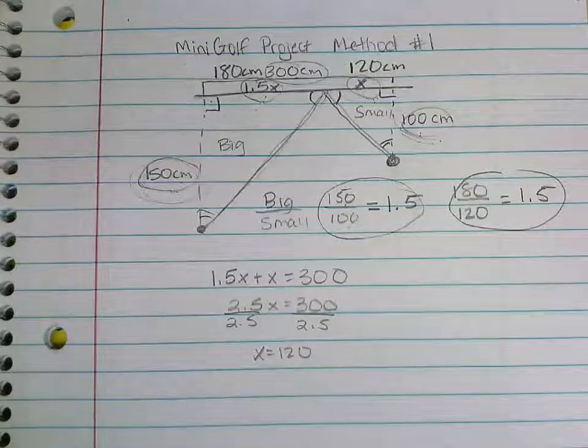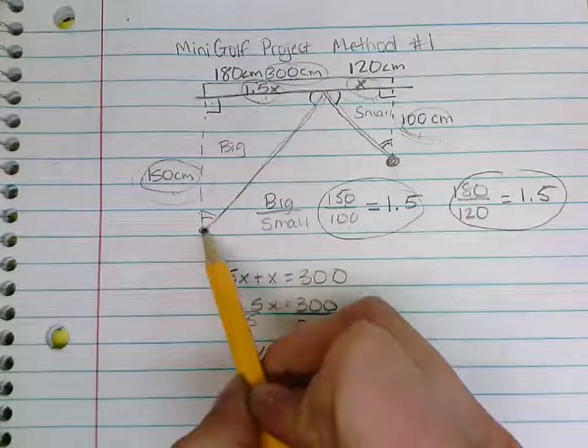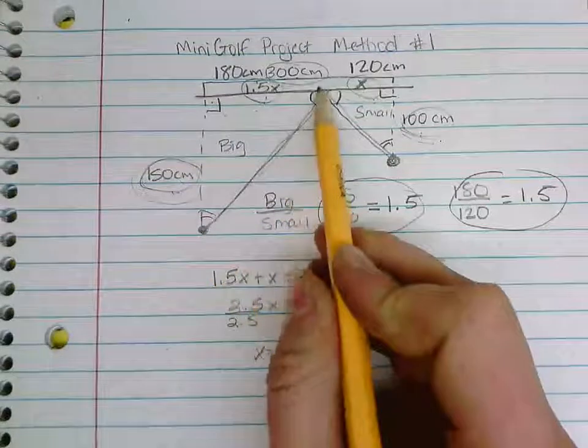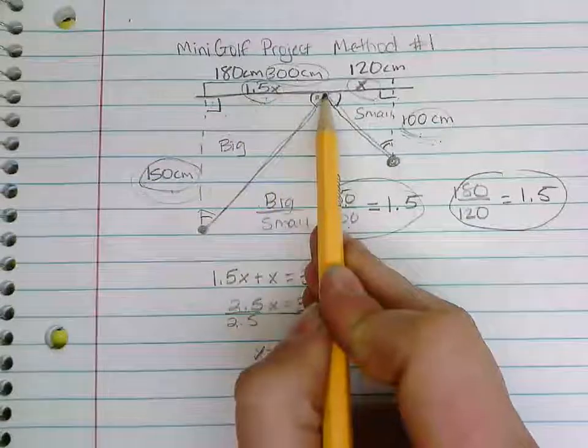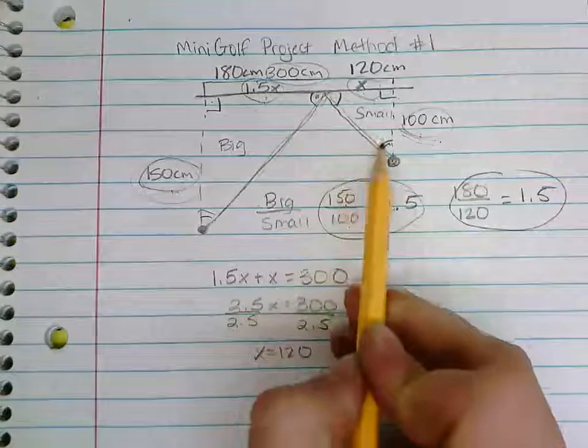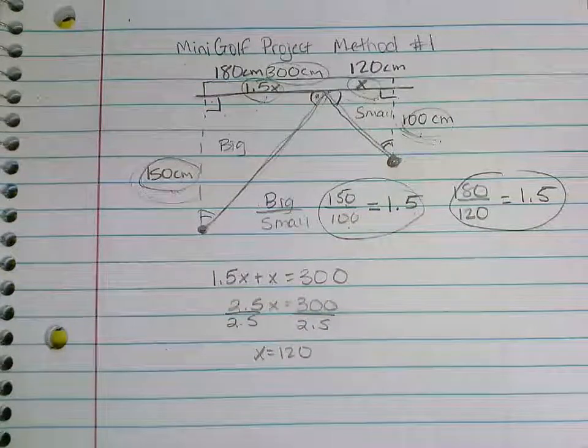So we should be able to place this ball right now 150 centimeters away from the wall on a tee, hit it against this point here that's 180 centimeters horizontally away against the wall, and it should be able to bounce off and run across our hole which is right here and is still 100 centimeters away from the wall.